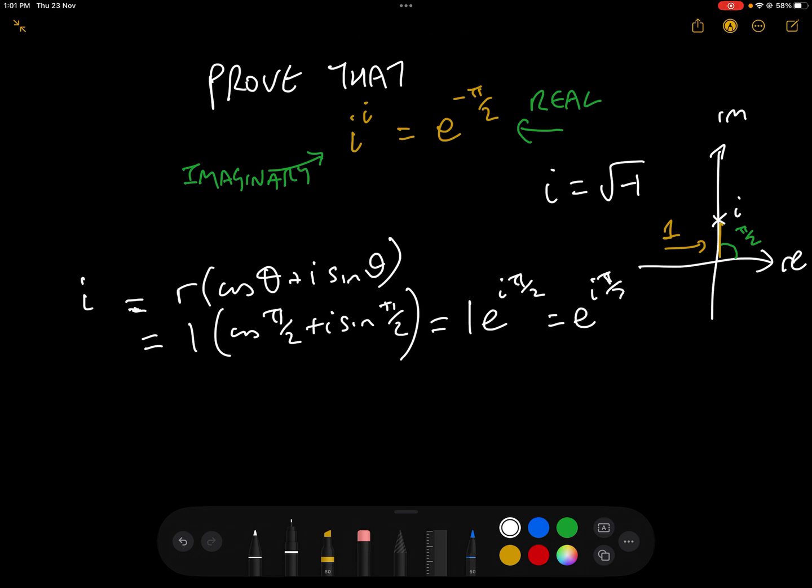And in exponential form that would be 1 e to the i pi over 2, which is just e to the i pi over 2. So we have i equals e to the i pi over 2.